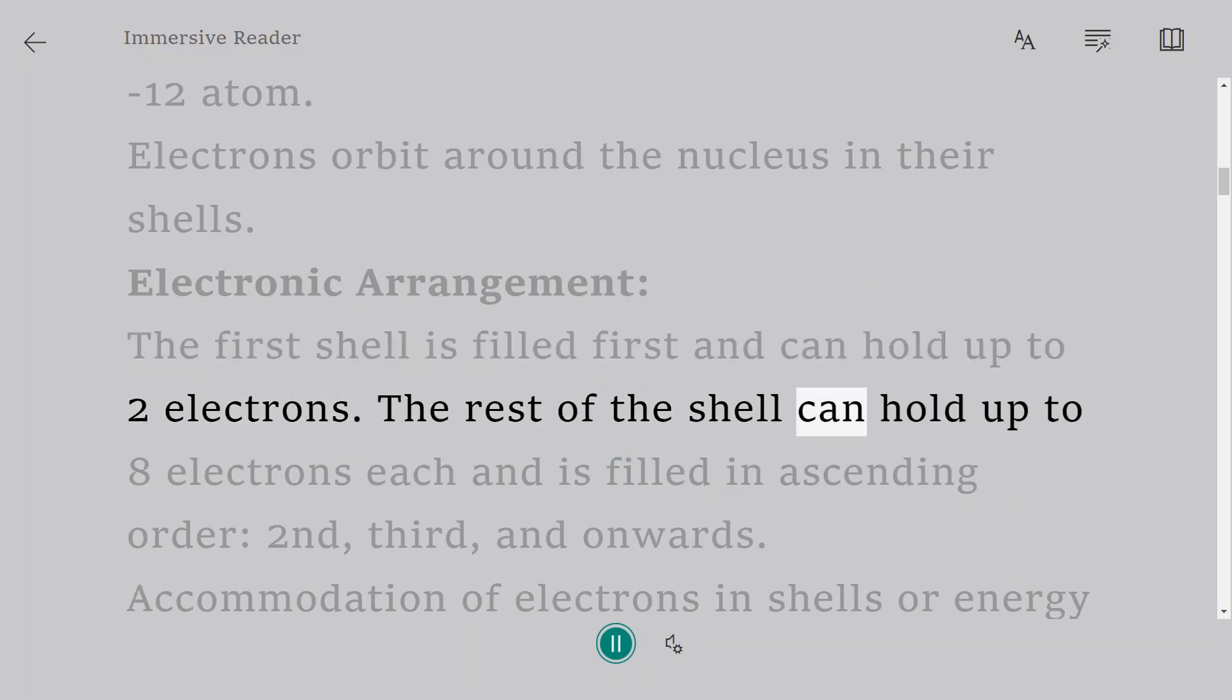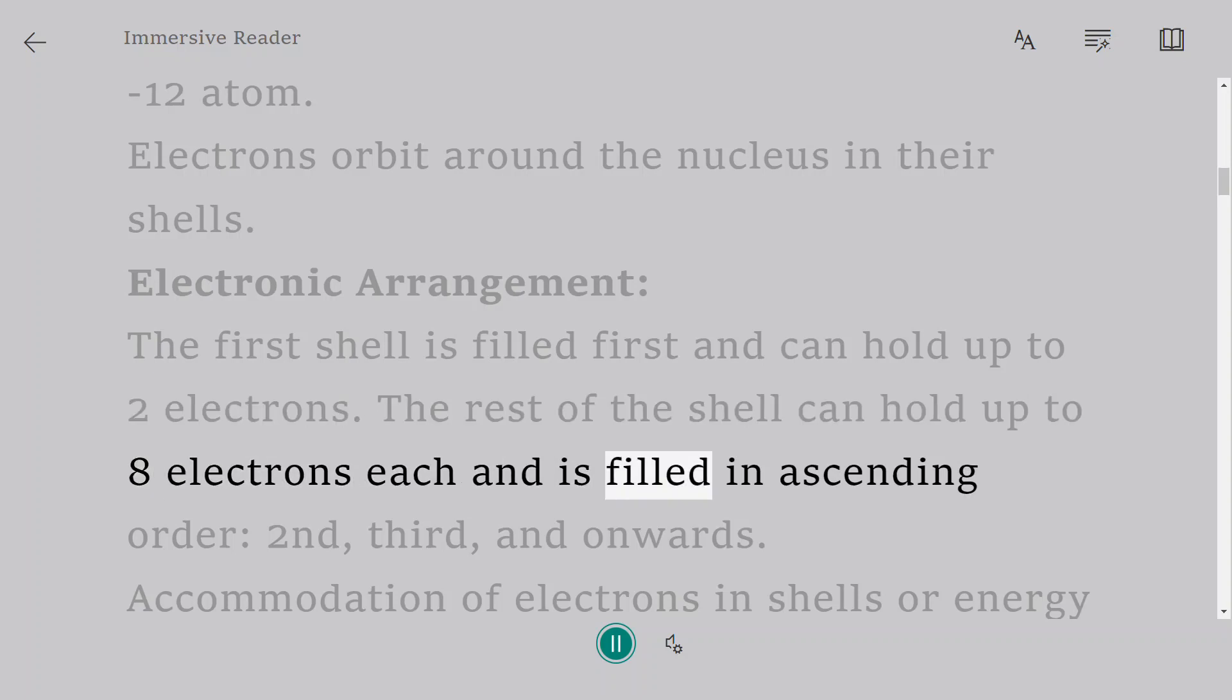The rest of the shell can hold up to eight electrons each and is filled in ascending order: second, third, and onwards.